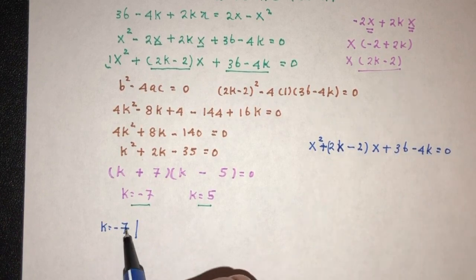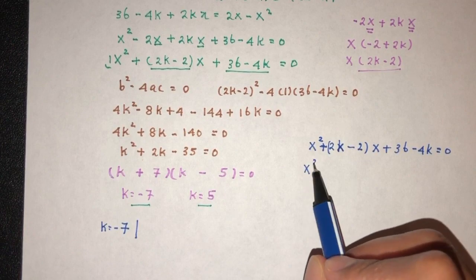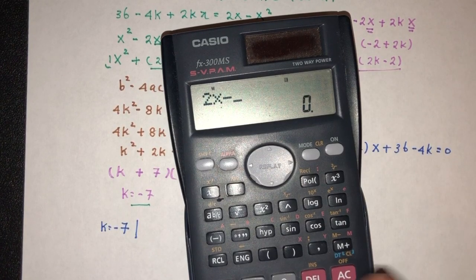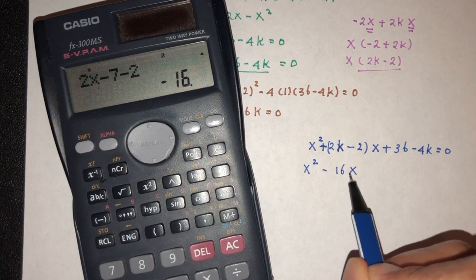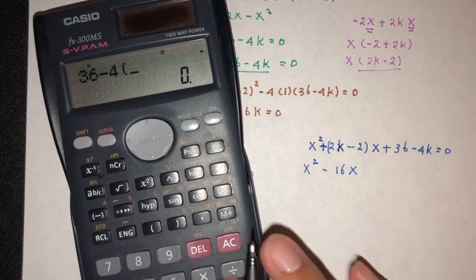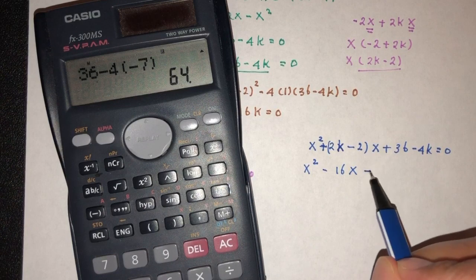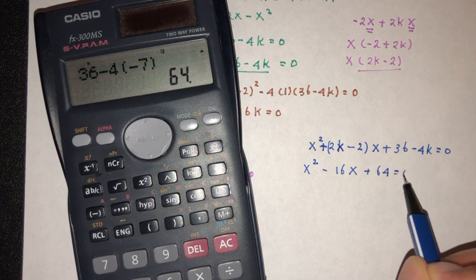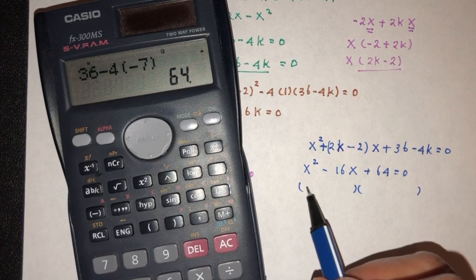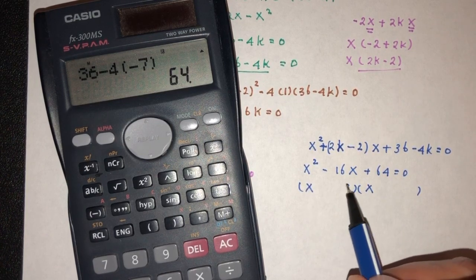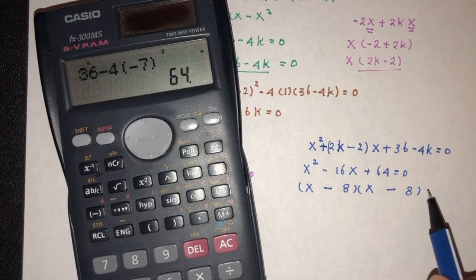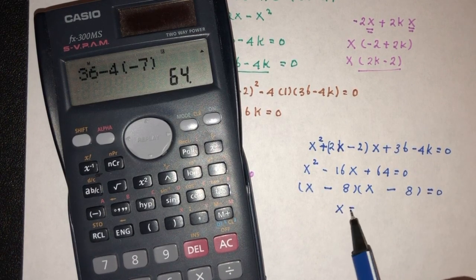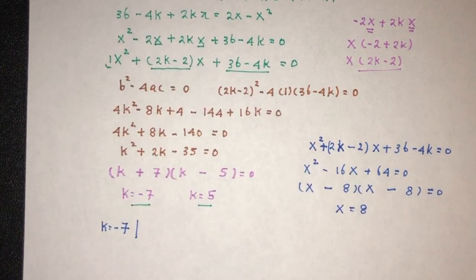Now when the value of k is equal to minus 7, what happens? That will be x². Now we have 2 times minus 7 minus 2, that should be minus 16x. 36 minus 4 times minus 7, that should be 64 equal to 0. Now we can factorize, obviously. That will be x times x. That will be 8 times 8. To get 16, we have to have minus 8 minus 8. So x equal to the value of 8. That is for the first case scenario.